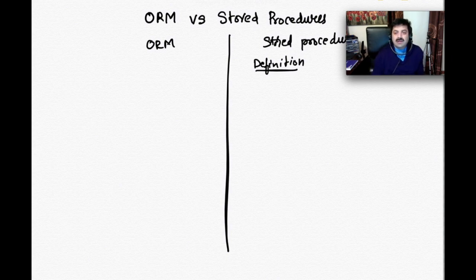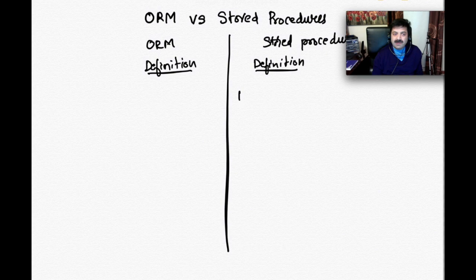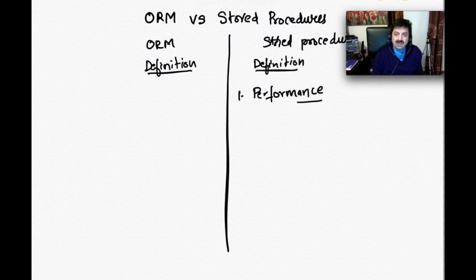Object Relational Mapper — ORM — stands for Object Relational Mapper. These are frameworks that help your objects persist in the database, and you don't have to worry about writing all those SQL statements.